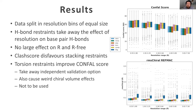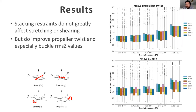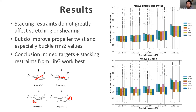The remaining question was whether to use stacking restraints together with our distance restraints. Looking at base pair parameters, stacking restraints don't do much for stretching or shearing. However, for buckle and propeller twist, the restraints that include stacking — the LIBG stacking combinations — all have much better RMSZ scores. Combining all results, we concluded that using the distance restraints together with the stacking restraints is the best combination.